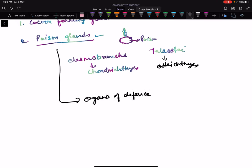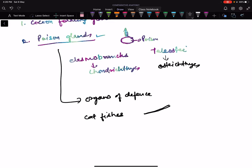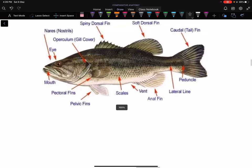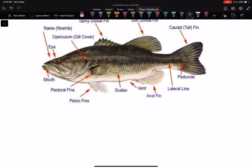These fishes - elasmobranchs and teleosts - have multicellular poison glands present in the integument, and these poison glands are used as organs of defense. These fishes use them for protection. For example, catfish - what they do is the fin, for example the pectoral fin, has a spine, and at the base of the spine the poison gland is located and used for defense.